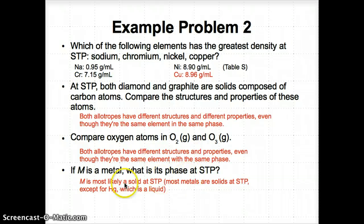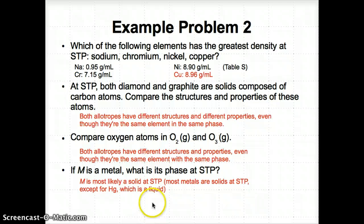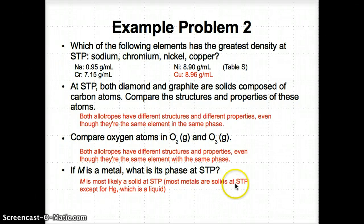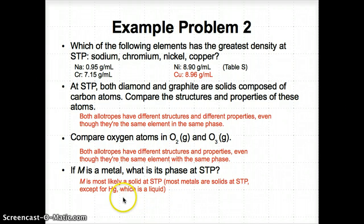Finally, this is a review of earlier material. If M is a metal, its phase at STP is most likely solid, because most metals are solids at STP — except for Hg (mercury), which is a liquid. So M is most likely a solid at STP, with mercury being the notable exception.